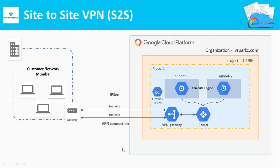A site-to-site VPN connection is represented as S2S, where two or more different networks are connected together using IPsec tunnels. In this connection model, devices in one network can reach devices in another network and vice versa.